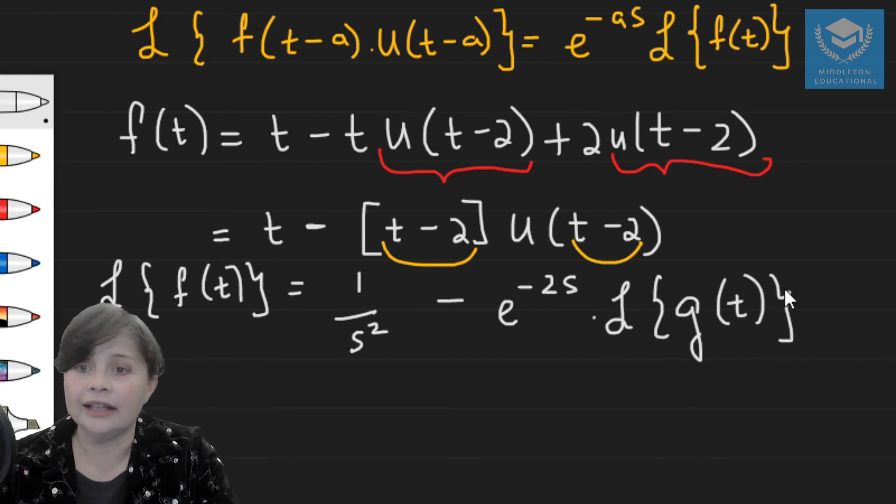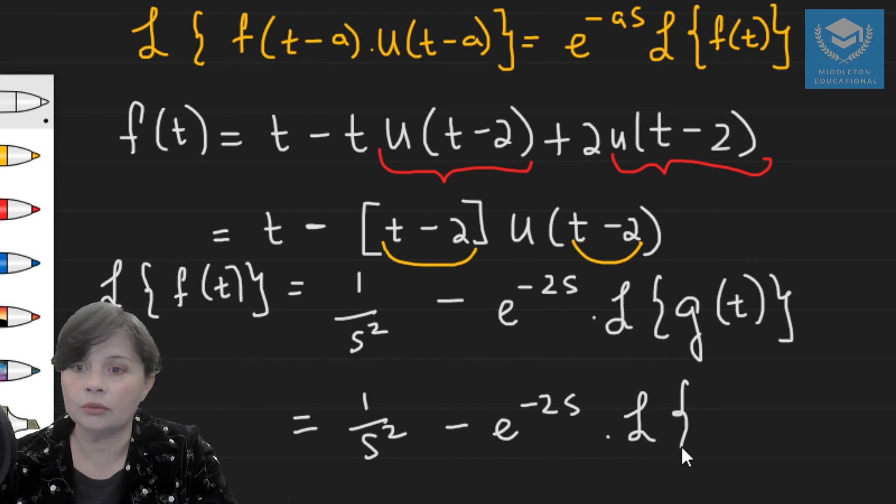And this g(t) is essentially the function in front of u(t-a) without the shift, which means it's the function without the minus 2. So that means you'll have 1 over s squared times the transform of t, because that's what the function is without the shift.